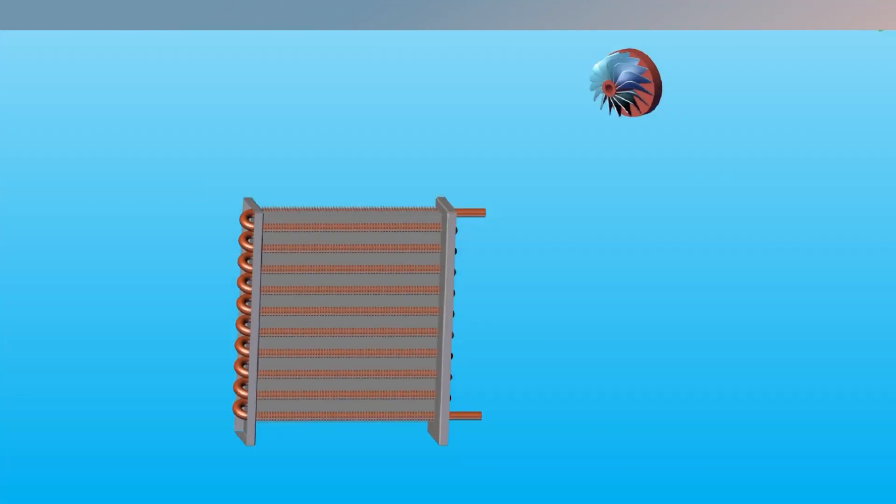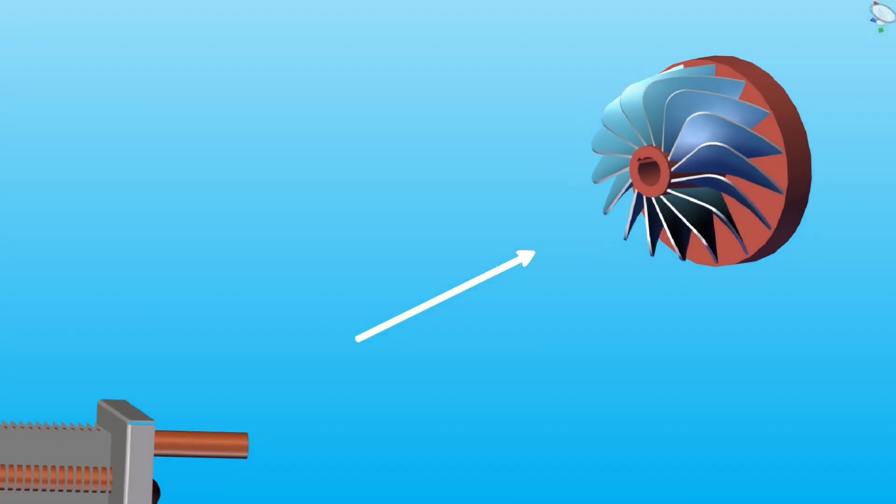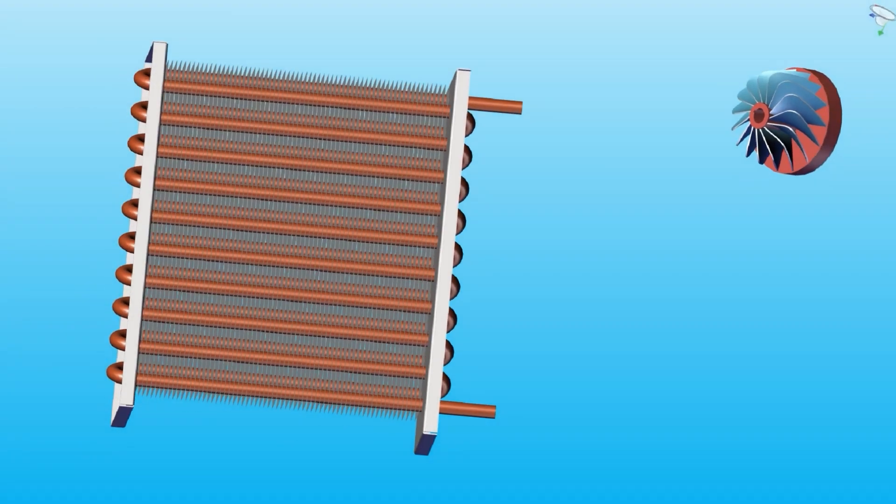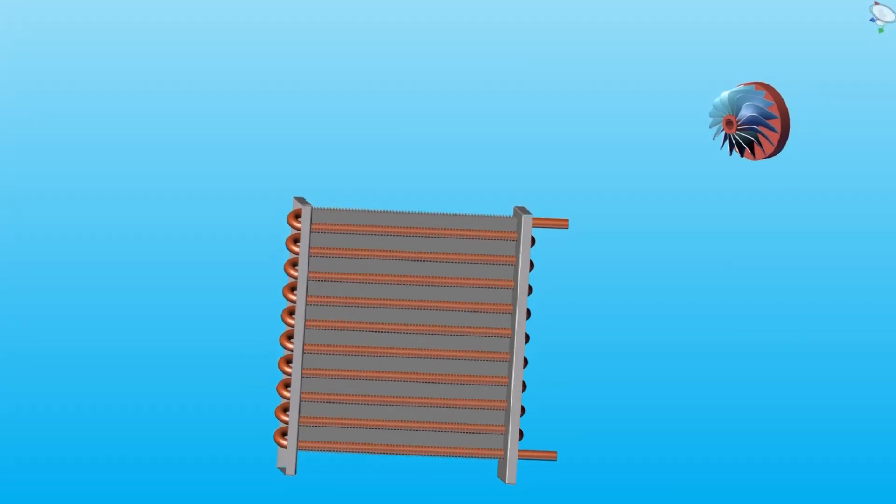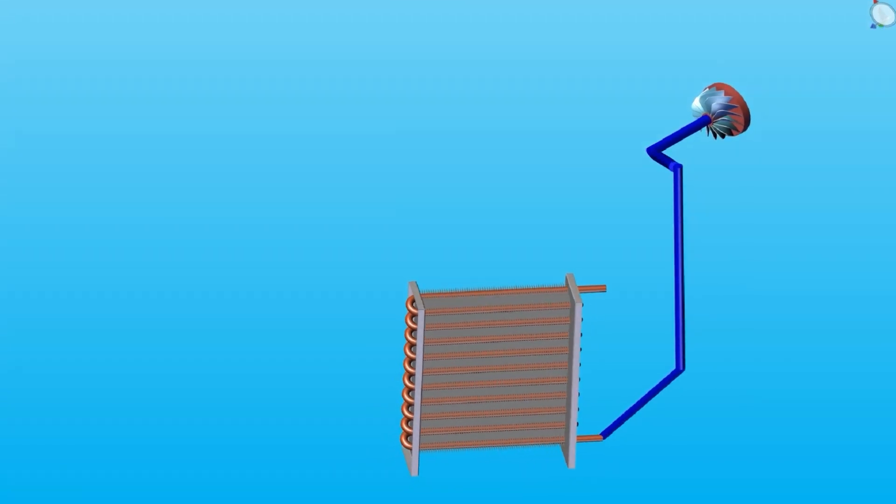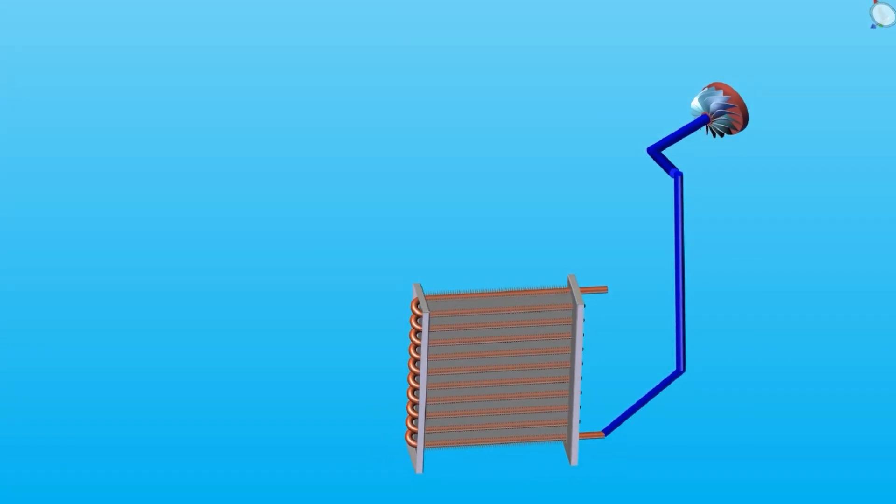This is the compressor and this is the evaporator, and here is the compressor inlet. The evaporator and compressor are connected by a refrigerant pipe, and refrigerant vapor circulates from the evaporator to compressor.